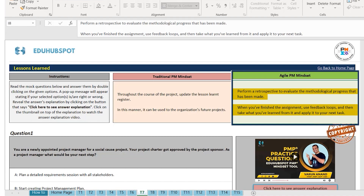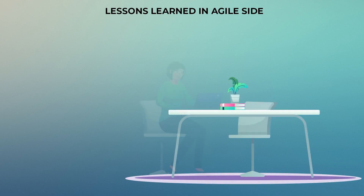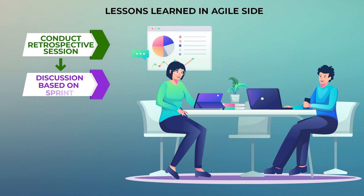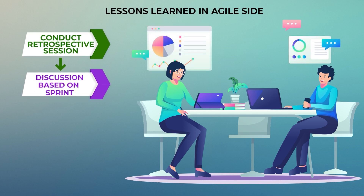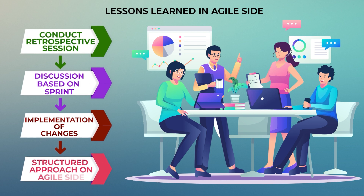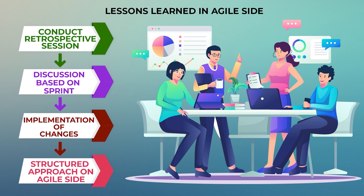On the Agile side, it's a little different. You take the feedback — for example, let's say you completed your first sprint. After the first sprint, you did a retrospective session. You talked about what things went well and what things did not go well. Based on that, you come up with certain points to implement from the next sprint. So on the Agile side, lessons learned are handled at a much more structured level compared to the traditional predictive side.